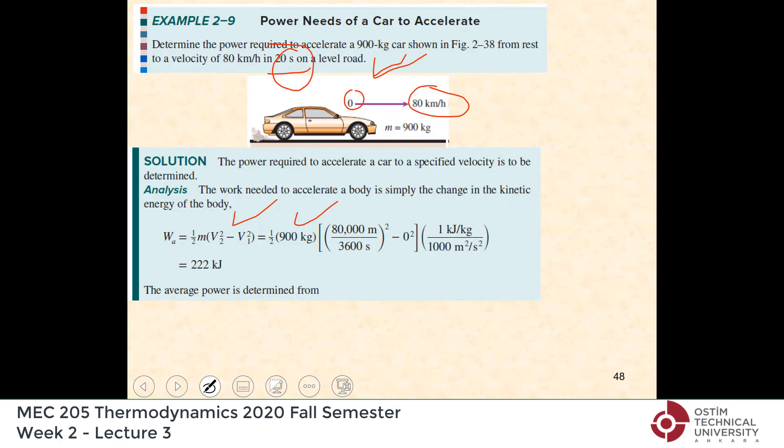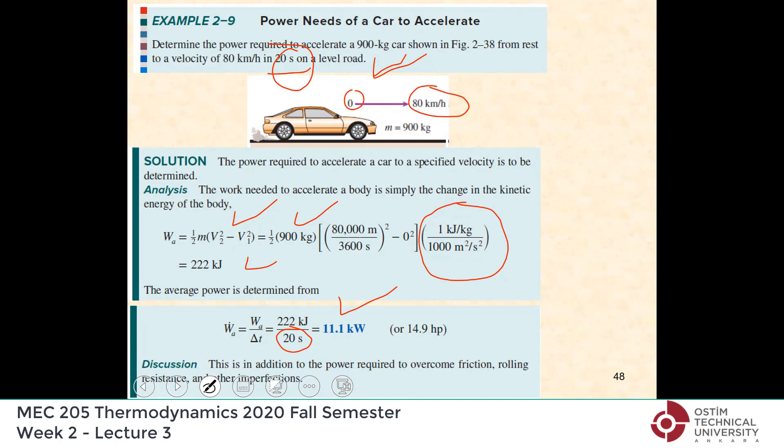The change in kinetic energy: plug in the values with the conversion factor — one kilojoule per kilogram equals 1000 square meters per second squared — and you end up with 222 kilojoules. But this is not power; divide by 20 seconds and you get 11 kilowatts, which is about 15 horsepower.